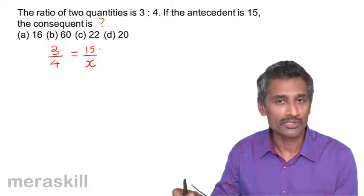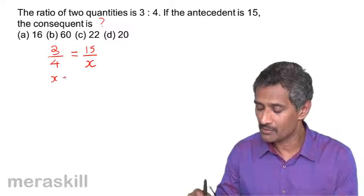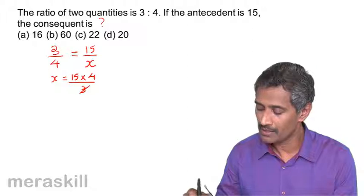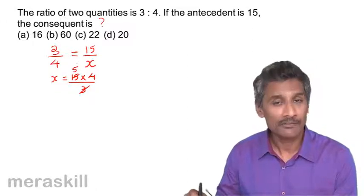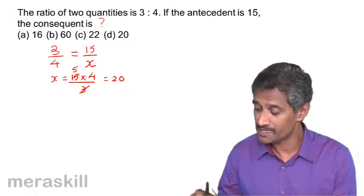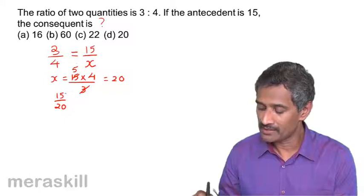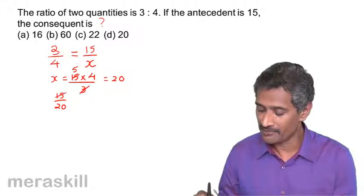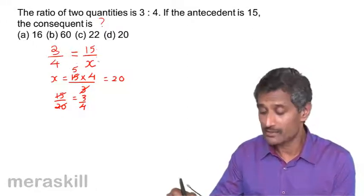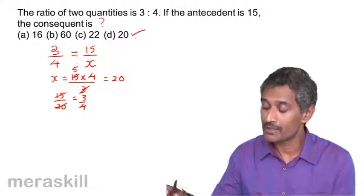If two things are in a particular ratio, both these quantities are going to be equal. So in such a case, X would be equal to 15 times 4 if we cross multiply, upon 3. Hence you have 3 times 5 is 15 times 4 is 20. Hence the consequent is 20. We can check: if you see 15 upon 20, cancel by 5, we get 3 is to 4. So the answer is 20.